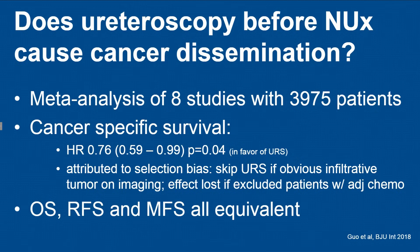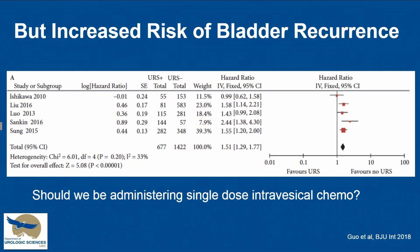One big fear around ureteroscopy before nephroureterectomy is that back pressure from retrograde procedures would disseminate cancer cells into the bloodstream. A meta-analysis of almost 4,000 patients from eight studies indicates that this doesn't happen — if anything, the hazard ratio favors ureteroscopy, though this is probably selection bias, as larger more aggressive tumors went straight to surgery. All outcomes measured were equivalent. There is, however, an increased risk of bladder recurrence supported by multiple retrospective studies, and we should probably be administering a single dose of intravesical chemotherapy after ureteroscopy, or even intraluminal in the upper tract as done in some centres.